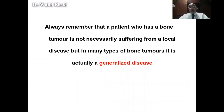We have to remember that a patient with a bone tumor is not necessarily suffering from a local disease. In many types of bone tumors, it is actually a generalized disease — he has a tumor in the bone but also micrometastasis in blood. If we treat it as a localized disease, he'll eventually develop metastasis and die, so we have to treat him both locally and systemically.